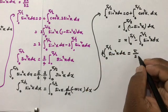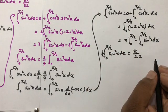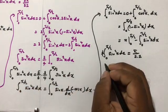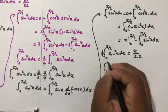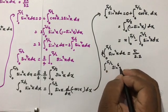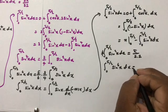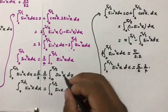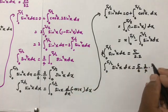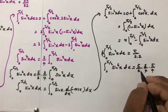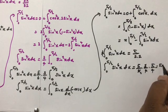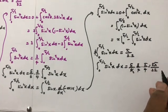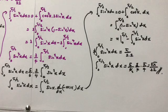Therefore the integral from 0 to π/2 of sin²(x) dx equals π/4. Substituting everything: the integral from 0 to π/2 of sin⁶(x) dx equals (5/6)·(3/4)·(π/4). The 3 cancels, giving the final answer of 5π/32.